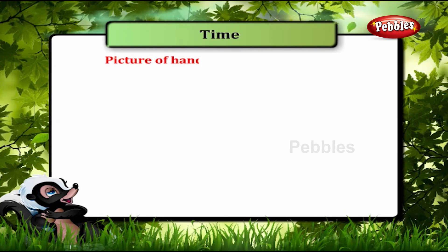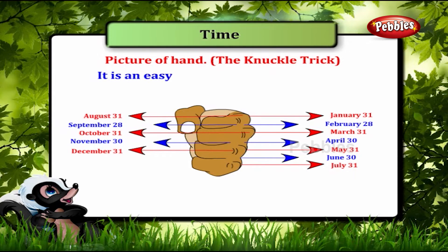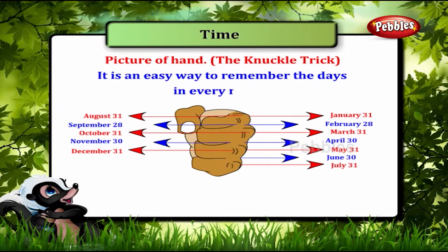Picture of hand — the knuckle trick. It is an easy way to remember the days in every month.